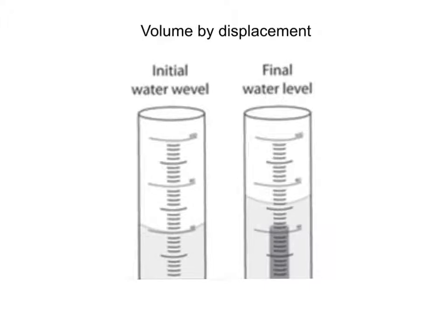This is very convenient. What we can do is measure where the water level is initially. Remember, when you're using a graduated cylinder, you have to read it at eye level, and you have to read from the bottom of the meniscus — in other words, where that curved U is at the bottom. Read it carefully, make sure you read between the lines and measure out as far as you can. I have lots of different graduated cylinders in the classroom, so make sure you understand what each line represents.